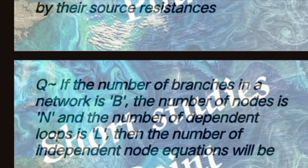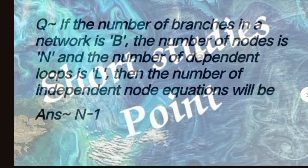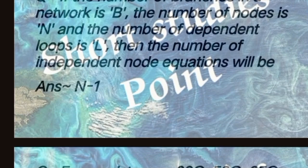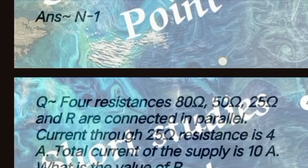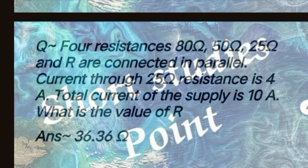Next question: If the number of branches in a network is b, the number of nodes is n and the number of dependent loops is l, then the number of independent node equations will be answer: n minus one.